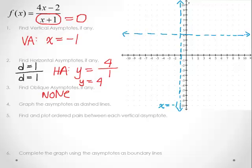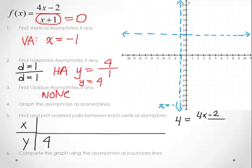Now we want to plot some points. Let me make a little table here for x's and y's. I'm going to start by looking at the horizontal asymptote first. Since we had a horizontal asymptote at y = 4, let me put y = 4 into our function and see if there's any x values. So we get 4 = (4x - 2)/(x + 1).